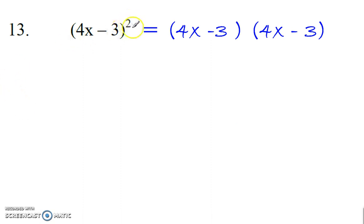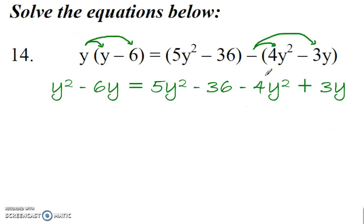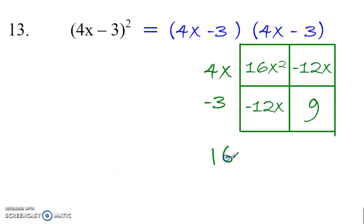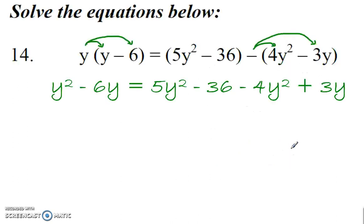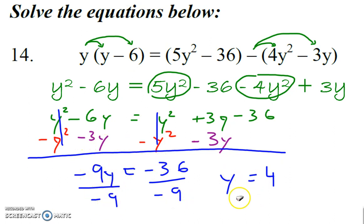Remember, this square means that you just multiply this by itself. Once you see that, you know we can use the box method — just like that. Line it up, combine like terms, and you get 16x squared plus 9. Start with distributive property here, then just combine like terms. Subtract the y squared, cancel those out. Then we have 6y here — move the y to the other side — leaves us with negative 9y equals negative 36. Divide that by 9 and you get y is equal to 4.